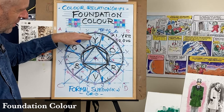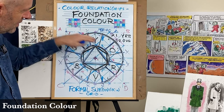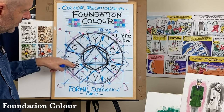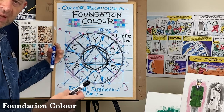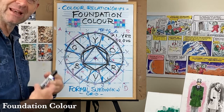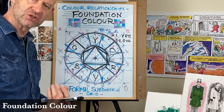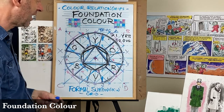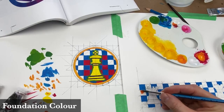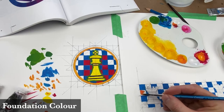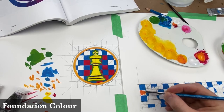In Foundation Color, we explore fundamentals of color theory — how color relationships work in art. We use those relationships to produce detailed designs based on the harmonies of warm and cool, light and dark, complementary and analogous.